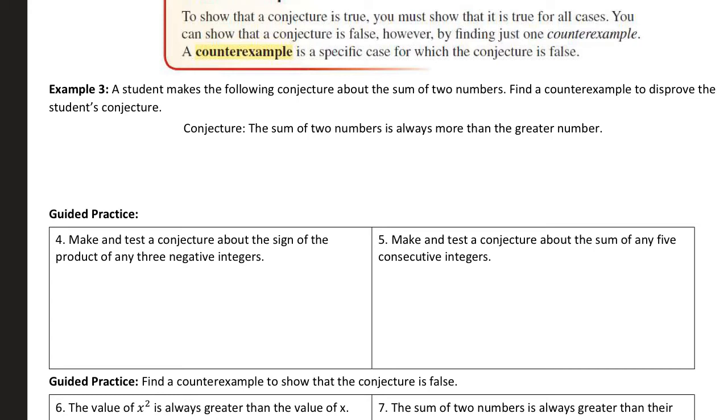So if somebody says all teachers wear something, glasses, I just would have to find a case of a teacher who doesn't wear glasses to prove that conjecture false. So if a student makes a conjecture about this sum of two numbers, we just got to find a counterexample to prove them false.